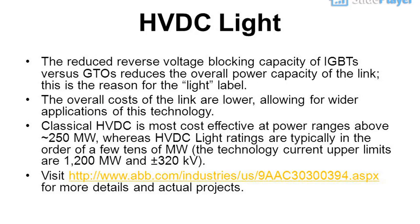HVDC Light: the reduced reverse voltage blocking capacity of IGBTs versus GTOs reduces the overall power capacity of the link — this is the reason for the 'light' label. The overall costs of the link are lower, allowing for wider applications. Classical HVDC is most cost effective at power ranges above ~250 MW, whereas HVDC Light ratings are typically in the order of a few tens of MW; the technology's current upper limits are 1200 MW and ±320 kV.